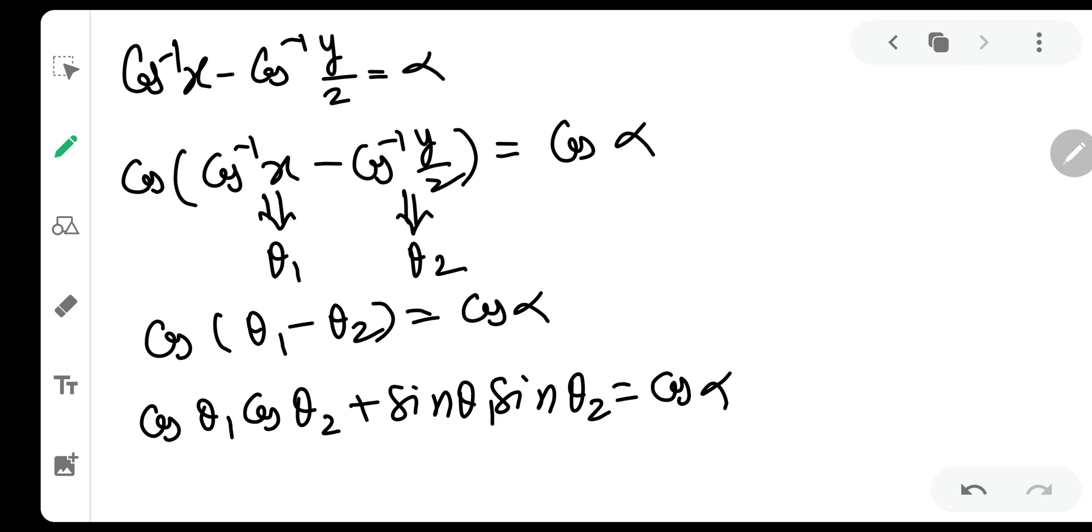Now, theta 1 is cos inverse x. So theta 1 is equal to cos inverse x. We can easily make the triangle. This is our triangle and this is our theta 1. So cos inverse x, it means that cos of theta 1 is equal to x. X means adjacency is x and hypotenuse is 1. So this value will be 1 minus x square as everyone can know. It is very simple. By Pythagoras, I have found out this.